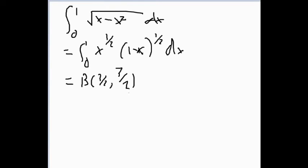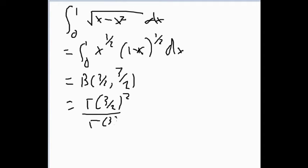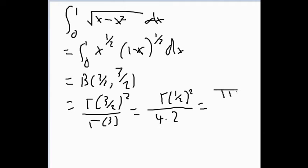Using the result we just proved, we rewrite this as Γ(3/2)²/Γ(3). Γ(3) = 2! = 2, and Γ(3/2) = (1/2)Γ(1/2). Squaring that gives (1/4)·Γ(1/2)² on top and 4·2 on the bottom (since it's squared). Γ(1/2) = √π, so Γ(1/2)² = π, giving π/8.